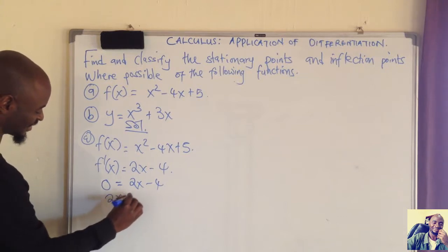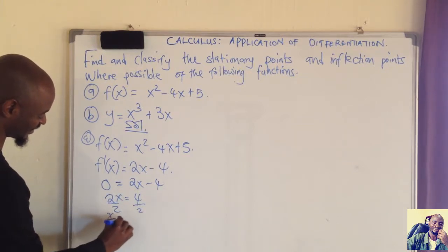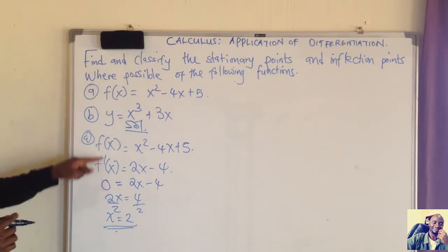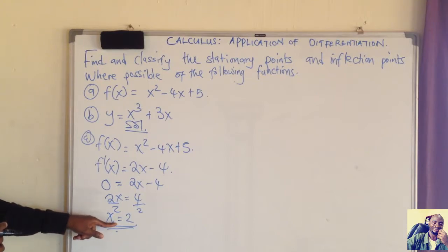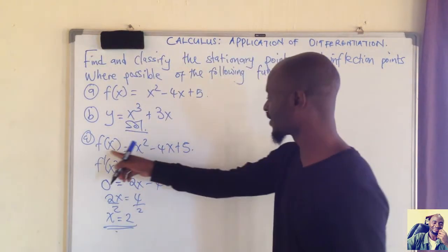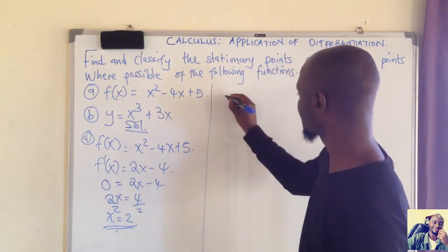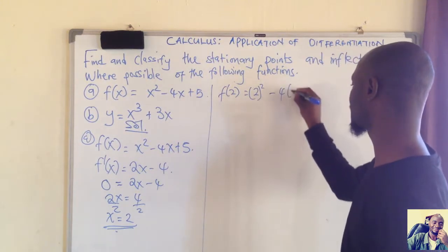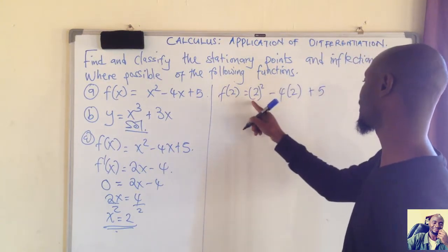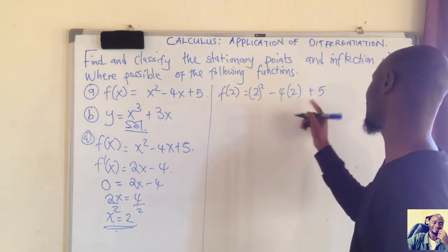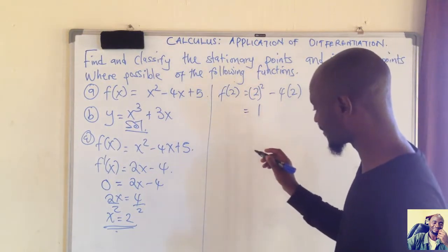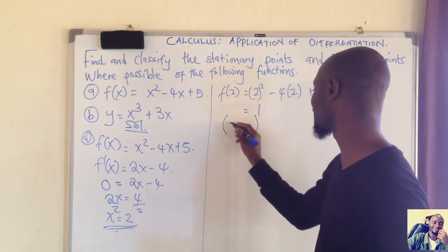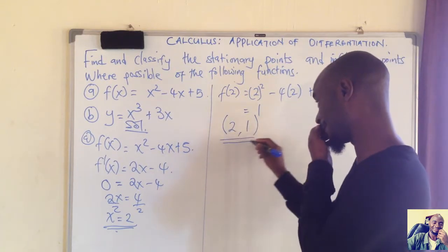Solving 0 = 2x − 4 gives x = 2. To find the y-value at this stationary point, we substitute x = 2 into the original function: f(2) = 2² − 4(2) + 5 = 4 − 8 + 5 = 1. So the critical point is (x, y) = (2, 1).